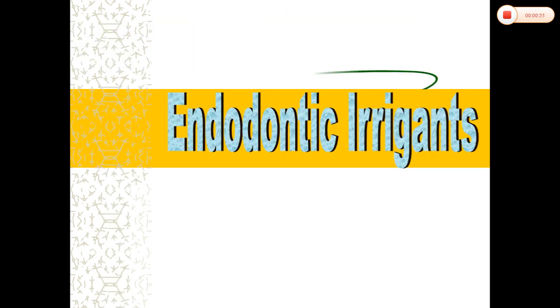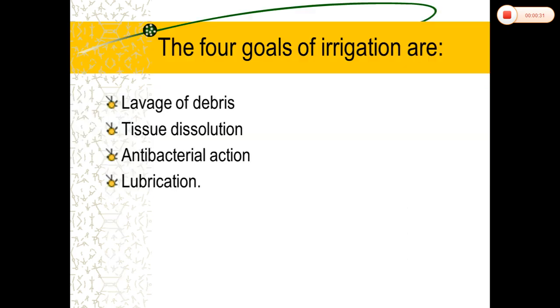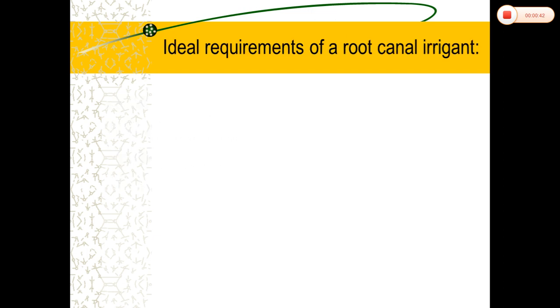Coming to endodontic irrigants, the main four goals of irrigation are: lavage of debris, tissue dissolution, antibacterial action, and lubrication.